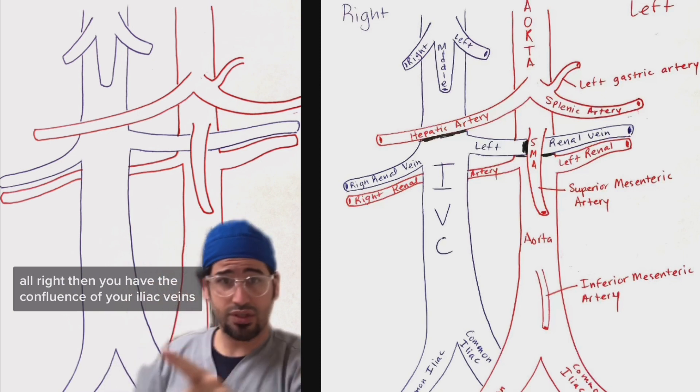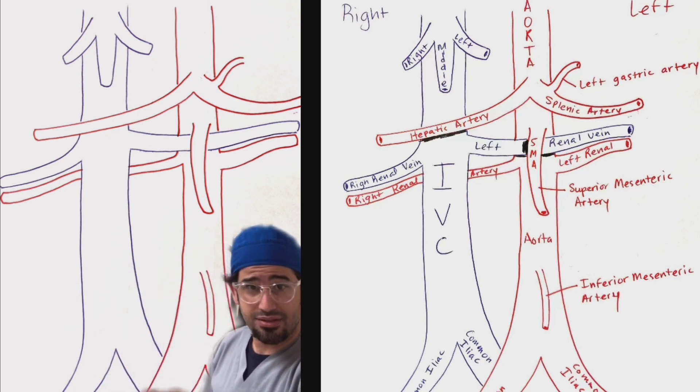Then you have the confluence of your iliac veins, so right common iliac vein, left common iliac vein. These two further bifurcate into external and internal iliac veins.